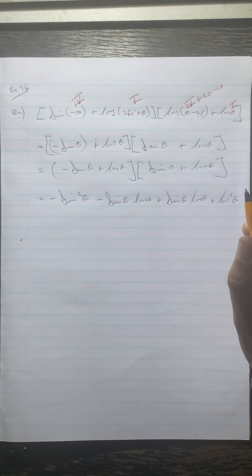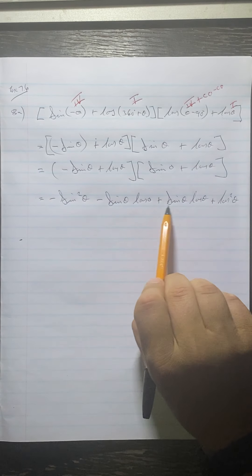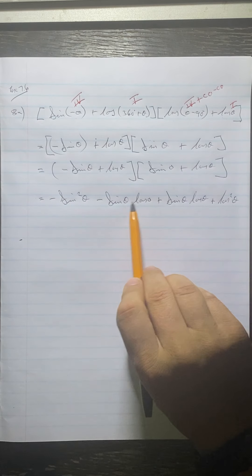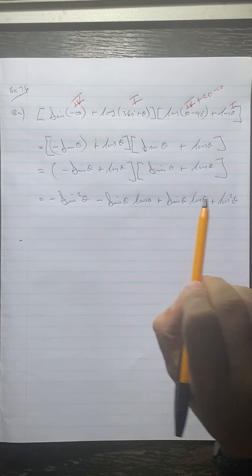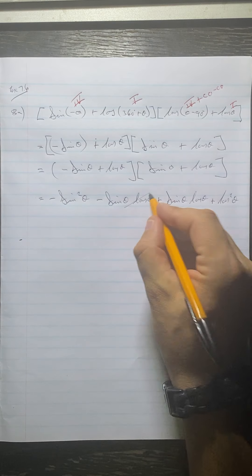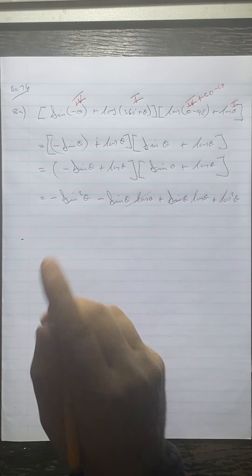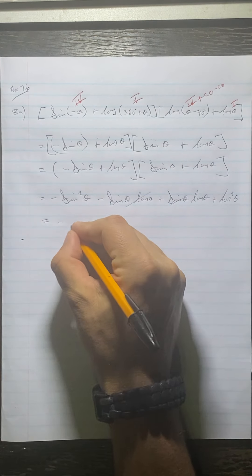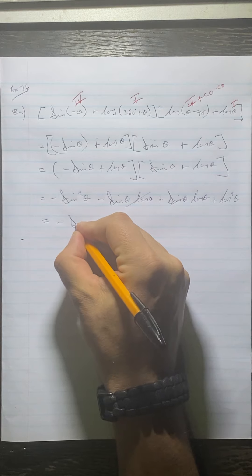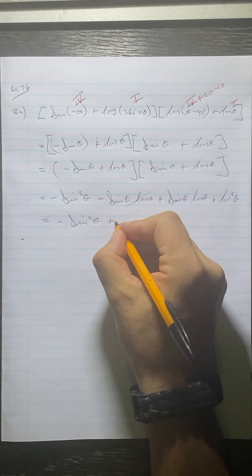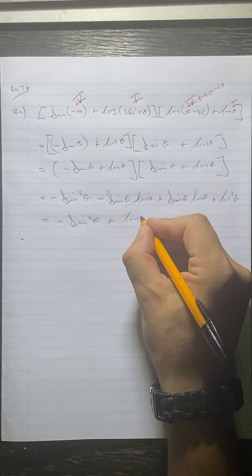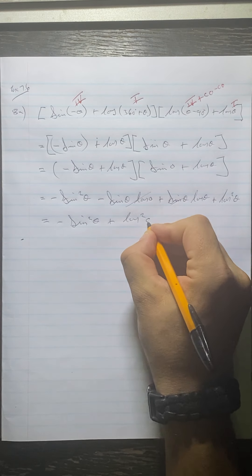I know it would be cos theta sine theta, but I'm changing it around to be sine theta cos theta, just so that it fits. You can flip them like that — it'll be the same thing. Then from here to here, that will give us plus cos squared theta. As you can see these are like terms, so minus sine theta cos theta plus sine theta cos theta will cancel. What we're left with is negative sine squared theta plus cos squared theta.